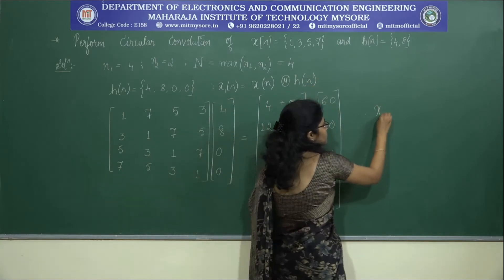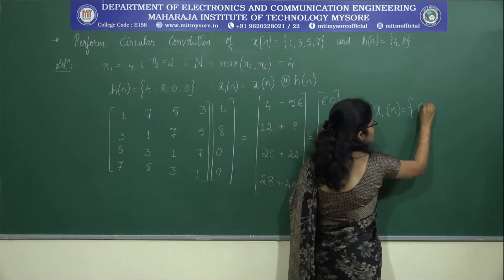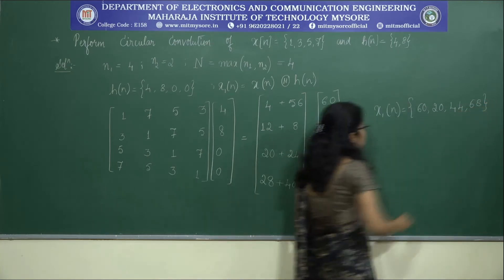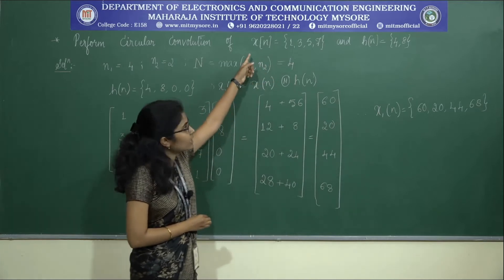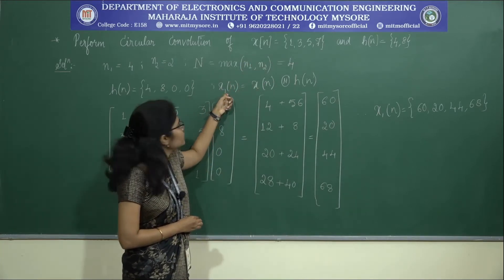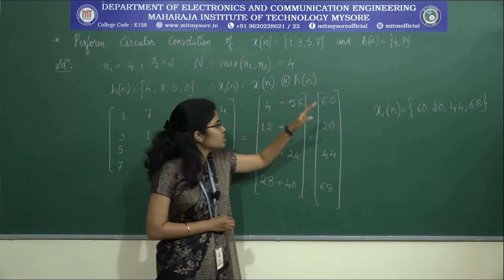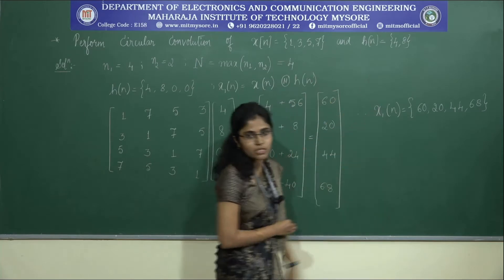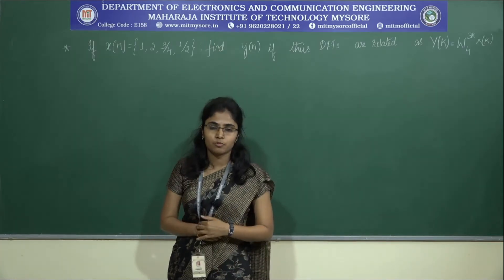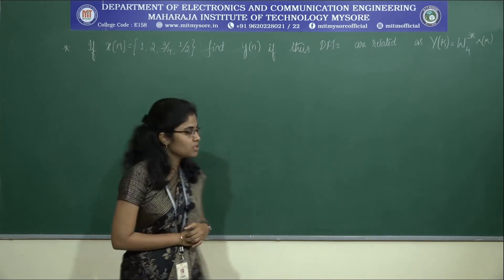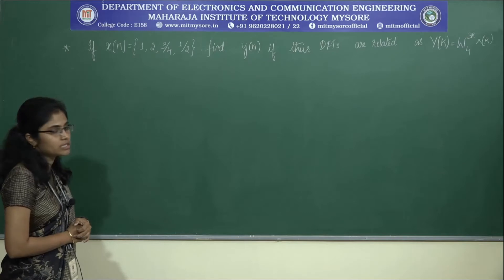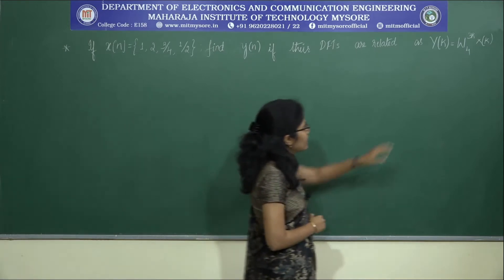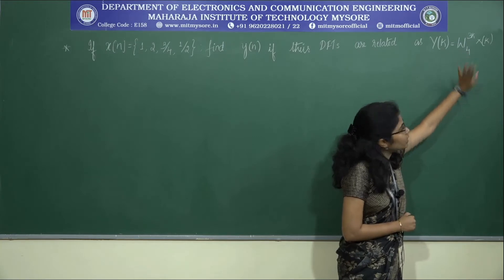The result was written as x(n) because the given question used that variable — you can use any variable as long as it matches the problem. This is how we find circular convolution when the lengths of the given sequences are different. Now let us move on to circular shift in time and frequency domain problems. The first question: given x(n) = {1, 2, 3/4, 1/2}, find y(n) if y(k) = W4^(3k) · X(k).